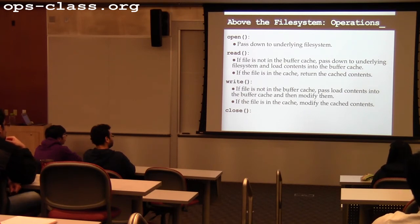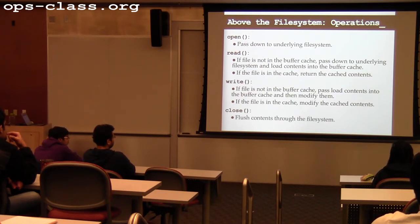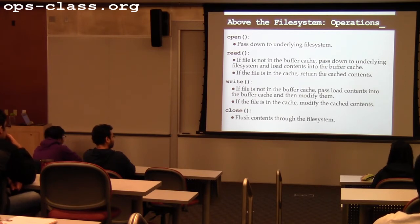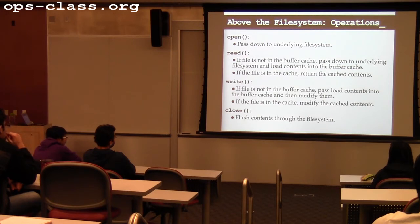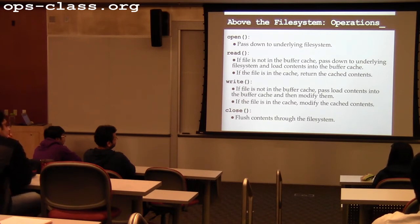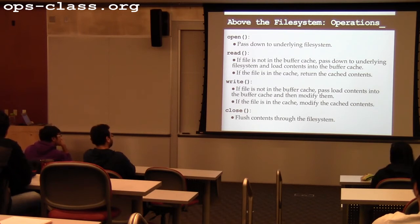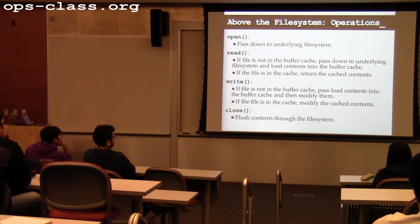When closing a file, that's a good time to flush the cache contents to disk. The flush operation actually tells the cache to send its content to disk — if you've been holding content in memory, please write it to disk now. When you call close, it might block the process that called close, but it won't block the whole system. Some of you have probably called flush or sync on a file handle in C.